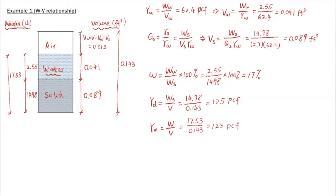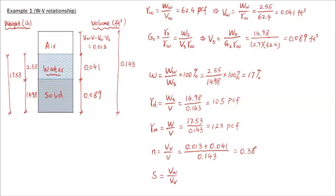For porosity n, it's volume of voids over total volume. Volume of voids equals volume of air plus volume of water: 0.013 plus 0.041 equals 0.054. The porosity is 0.38, or 38%. For degree of saturation, that's volume of water over volume of voids times 100%, which is 0.041 divided by 0.054, giving 76%.